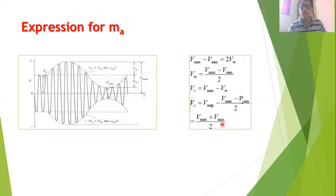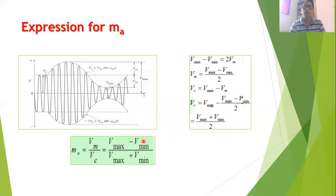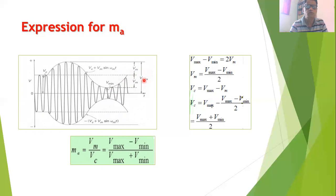We can now easily obtain the formula for modulation index. Since m_a = Vm / Vc, substituting both expressions the factor of 2 cancels, giving: m_a = (Vmax − Vmin) / (Vmax + Vmin). Practically, when you observe such a waveform on a CRO, you simply measure Vmax and Vmin from the central axis, subtract them in the numerator, add them in the denominator, and compute the ratio to find the modulation index.